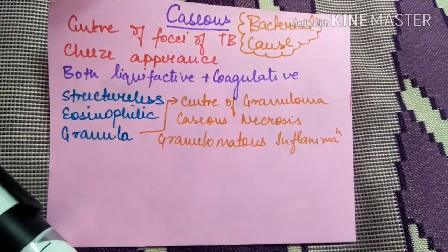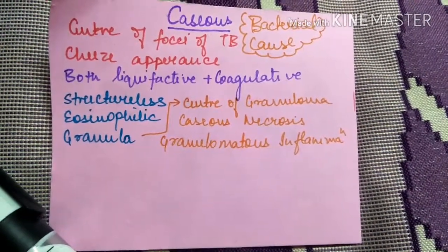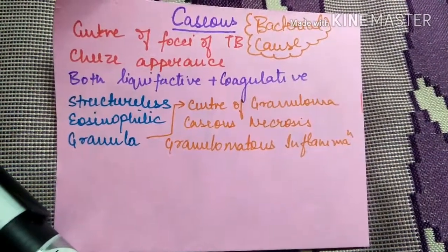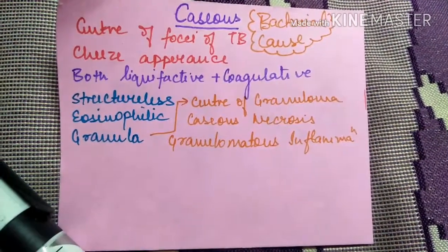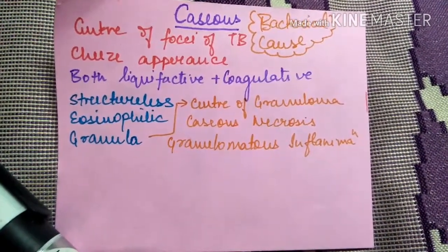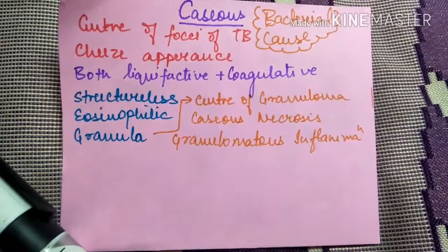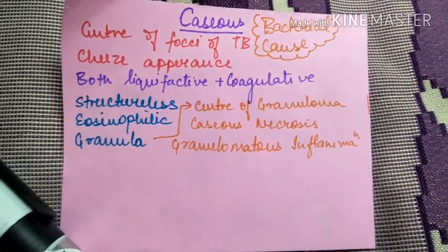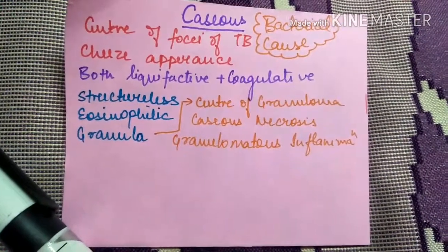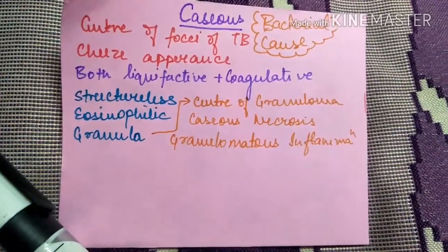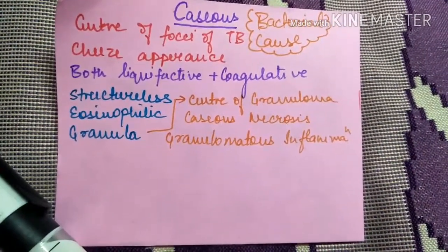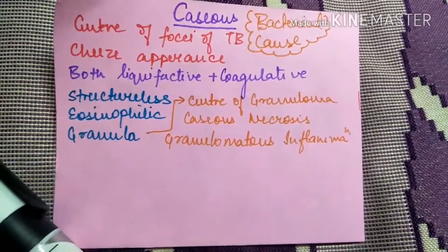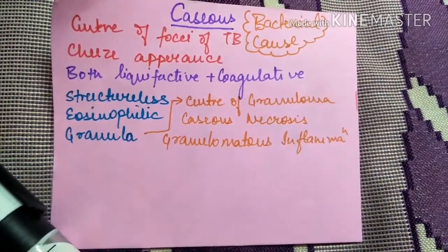Caseous necrosis occurs due to bacterial causes and is seen in the center of foci of TB. It has a very cheesy appearance and has characteristics of both liquefactive and coagulative necrosis — structureless, eosinophilic, and granular. These are characteristics of caseous necrosis. Granuloma is the center of granuloma.